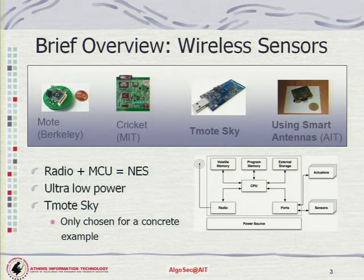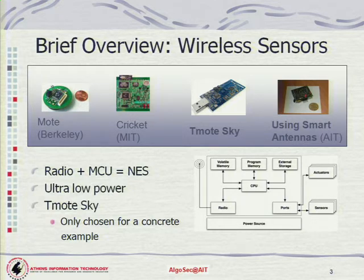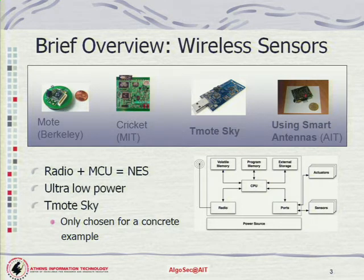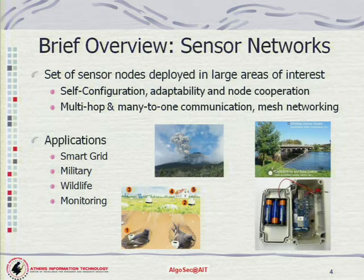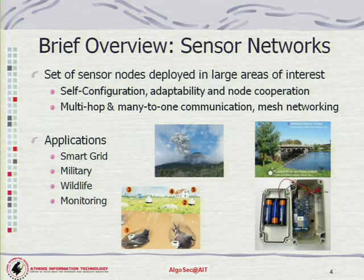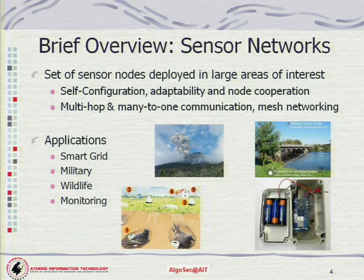Since energy is not one of the strong aspects of sensor nodes, network application and routing underlying protocols are really lightweight in terms of memory and energy, so most of the time these are ultra-low power devices. You can see some sample hardware platforms; we are using the third one, called T-Mode Sky. We chose this as a concrete example because this is the hardware I have access to at my university. Now, if we take a set of such sensor nodes and deploy them in large areas of interest, we have a wireless sensor network which is able to self-configure and adapt to different kinds of changes.